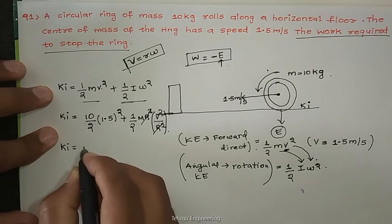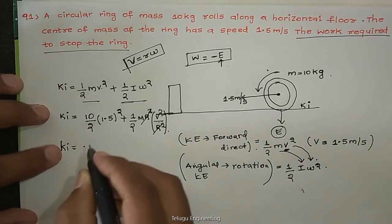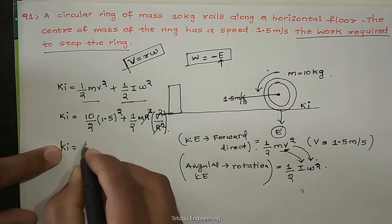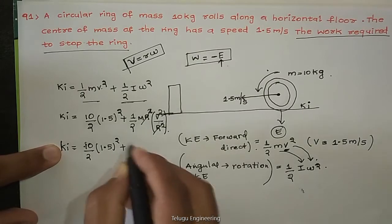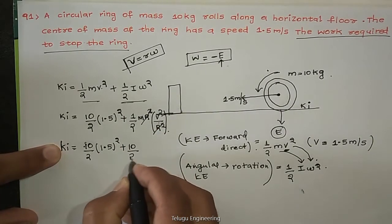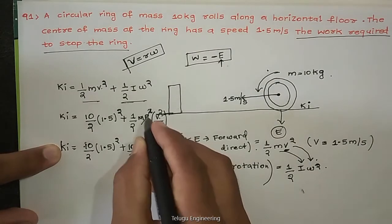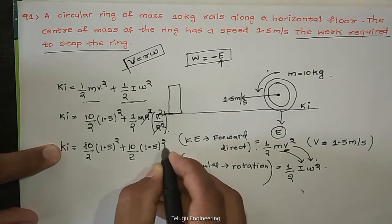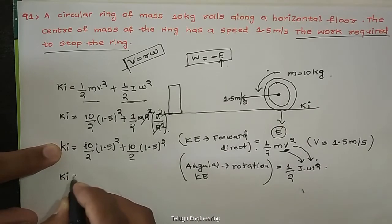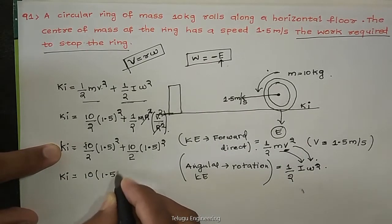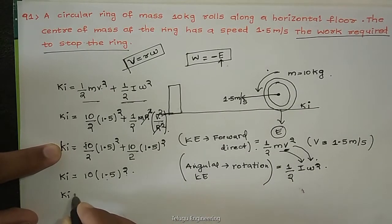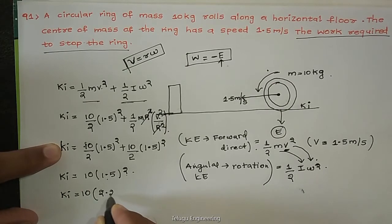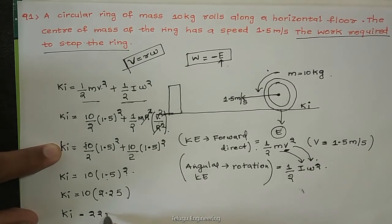After cancellation, the initial energy equals 10 by 2 into 1.5 squared plus 10 by 2 into 1.5 squared, which is 2 times 10 by 2 into 1.5 squared. Since 1.5 squared equals 2.25, the initial kinetic energy equals 10 times 2.25 equals 22.5 joules.